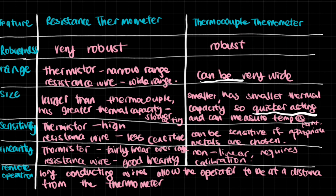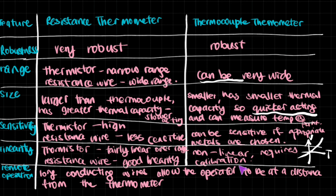For sensitivity: the thermistor tends to have very high sensitivity. Resistance wire is less sensitive but stable over a wide range. Thermocouples can be very sensitive depending on the metals used. For linearity: the thermistor is fairly linear over its range. Resistance wires have very good linearity, being stable over a wide range. Thermocouple thermometers are non-linear, as seen from the voltage-against-temperature graph which curves rather than being straight. This requires calibration — you need to add a linear scale to this non-linear voltage output.